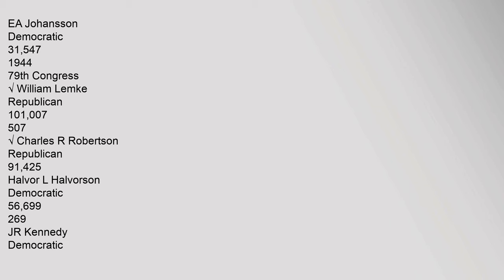1944 (79th Congress) — William Lemke, Republican: 101,700 (50.7%); Charles R. Robertson, Republican: 91,425; Halvor L. Halverson, Democratic: 56,699 (26.9%); Junior Kennedy, Democratic: 45,308; Usher L. Burdick, Independent R.: 39,888 (21%); George McClellan, Independent R.: 3,135; A.C. Townley, Independent R.: 2,307. 1946 (80th Congress) — William Lemke, Republican: 103,205 (74.3%).